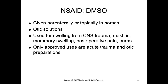DMSO is used topically and parenterally primarily in horses and is also a component of some otic preparations used in dogs and cats. It is widely used off-label to treat a variety of conditions including swelling from CNS trauma, mastitis, post-operative pain, burns, and other superficial trauma. However, the only approved uses are for acute injury associated with trauma or as an anti-inflammatory in otic preparations.